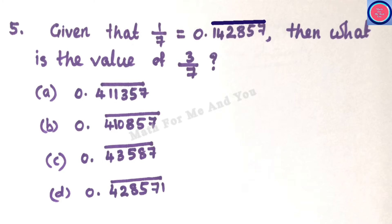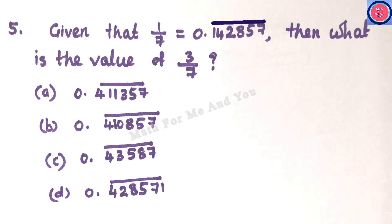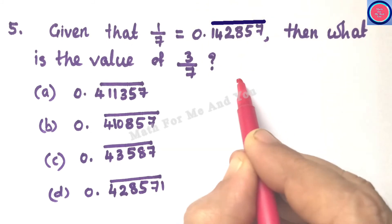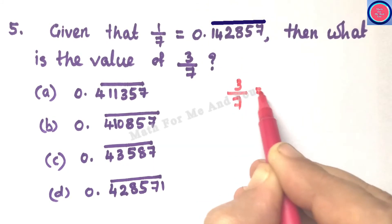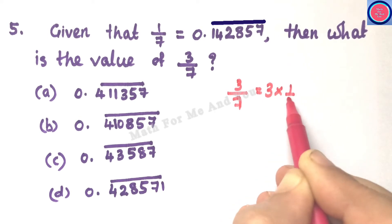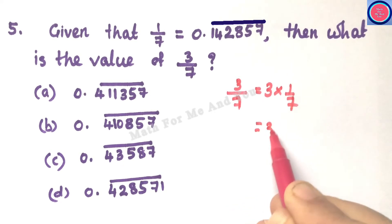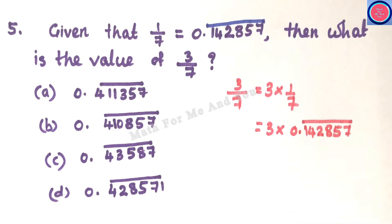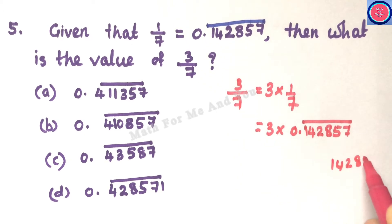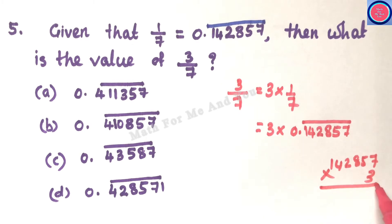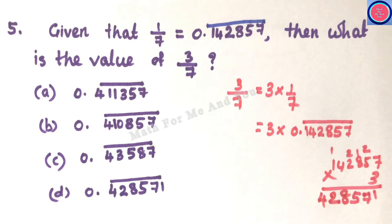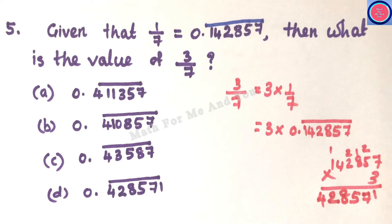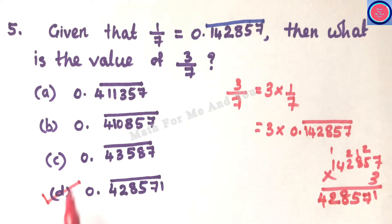Q5: Given that 1/7 = 0.142857̄, what is the value of 3/7? Since 3/7 = 3 × (1/7), multiply 0.142857̄ by 3. Write the digits without the point — 142857 × 3 — then place the decimal point to give 6 decimal places, obtaining 0.428571̄. The correct option is D.